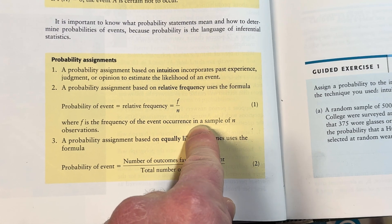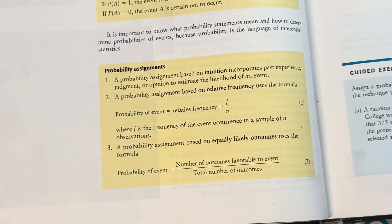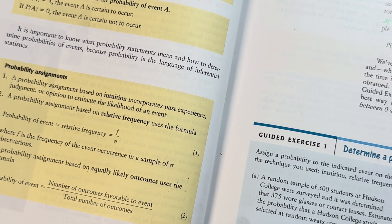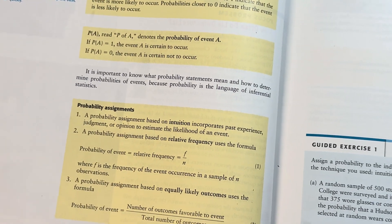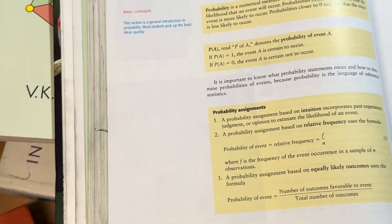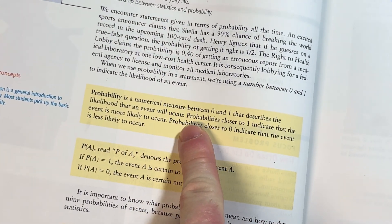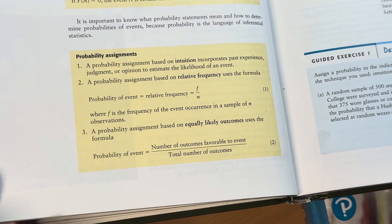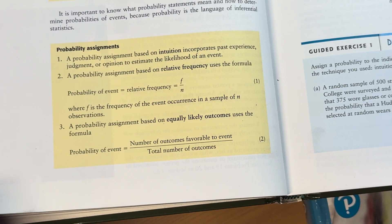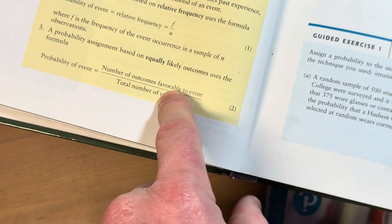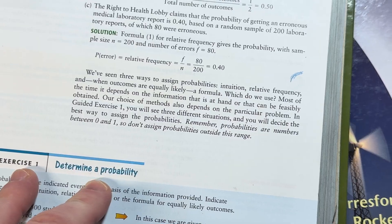There are different ways of computing probabilities. You can use intuition, or you can use relative frequency — the frequency of the event's occurrence in a sample of n observations. For example, if there are 300 students and 187 of them pass the class, the probability that someone passes in the future is 187 over 300. You're using data you have now to make a prediction about the future, because that's what a probability is — a number that describes the likelihood that an event will occur. There's also probability assignment based on equally likely outcomes, which uses a formula and is the one you typically use the most.